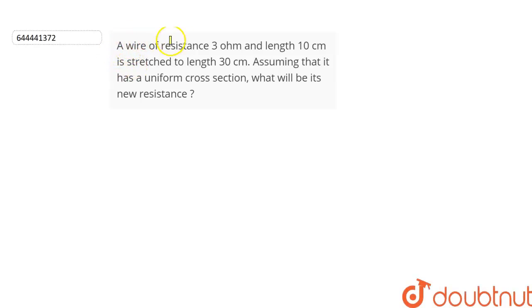The question is: a wire of resistance 3 ohm and length 10 centimeter is stretched to a length of 30 centimeters, assuming that it has a uniform cross section, what will be the new resistance? Let's find out.